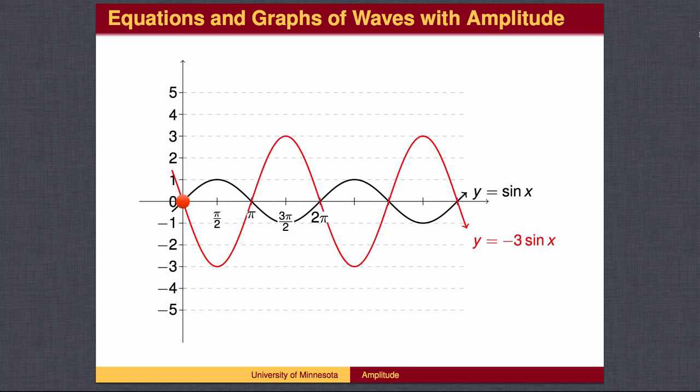The graph of y equals negative 3 times the sine of x will have an amplitude of 3, reach its low point of negative 3 at pi over 2, return to 0 at pi, reach its high point of 3 at 3 pi over 2, and return to 0 at 2 pi.